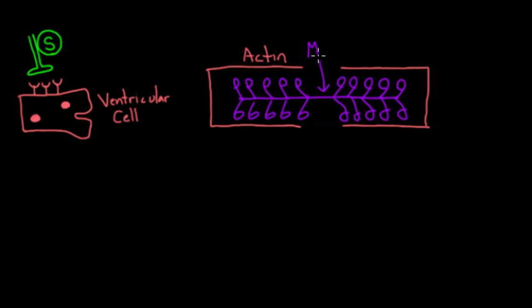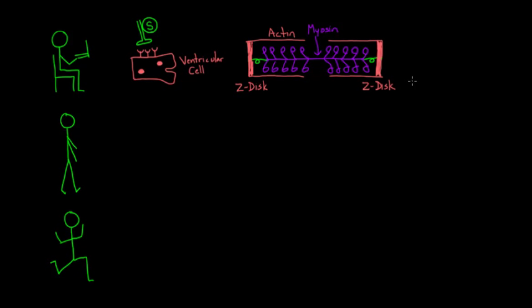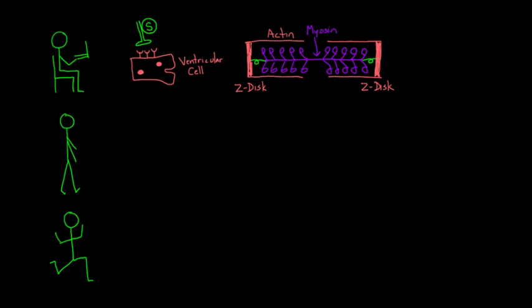And then finally the titin. The titin is a protein that basically is going to attach the myosin to the Z disk. Remember, our Z disk is this thing at the end. Sometimes you see Z line, it's kind of interchangeable. It's basically tethered by those actin ropes. And we're going to use those ropes to pull the Z disks together.